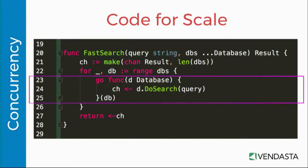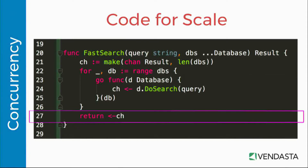Now all three gophers are off and running towards the books. What do we do next? We wait. The return statement is a read from the channel, and in Go, if the channel is empty, this read blocks. So we're blocking and waiting. As soon as one of our goroutines writes back to the channel, we return and give the result back to our users.